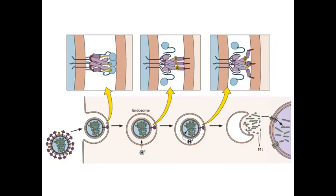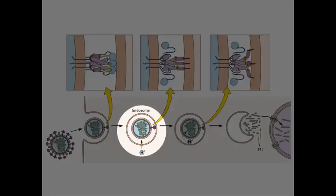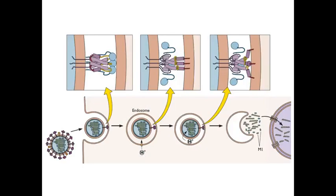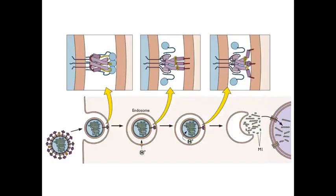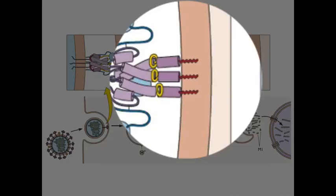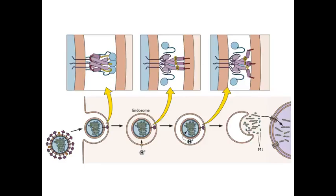As these endosomes move into the cell, they become acidified. There are pumps in the endosome membrane that actively transport protons into the interior. It becomes acidified, and at about a pH of 5 to 6, that causes a conformational change in the hemagglutinin. These fusion peptides flip up and they insert into the cell membrane. You can see it going from down by the viral membrane into the cell.